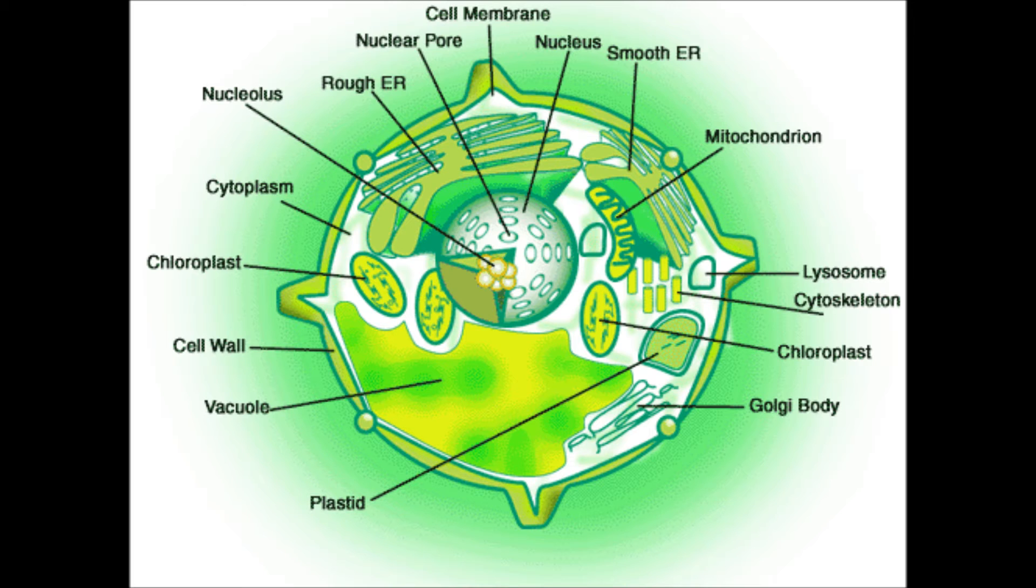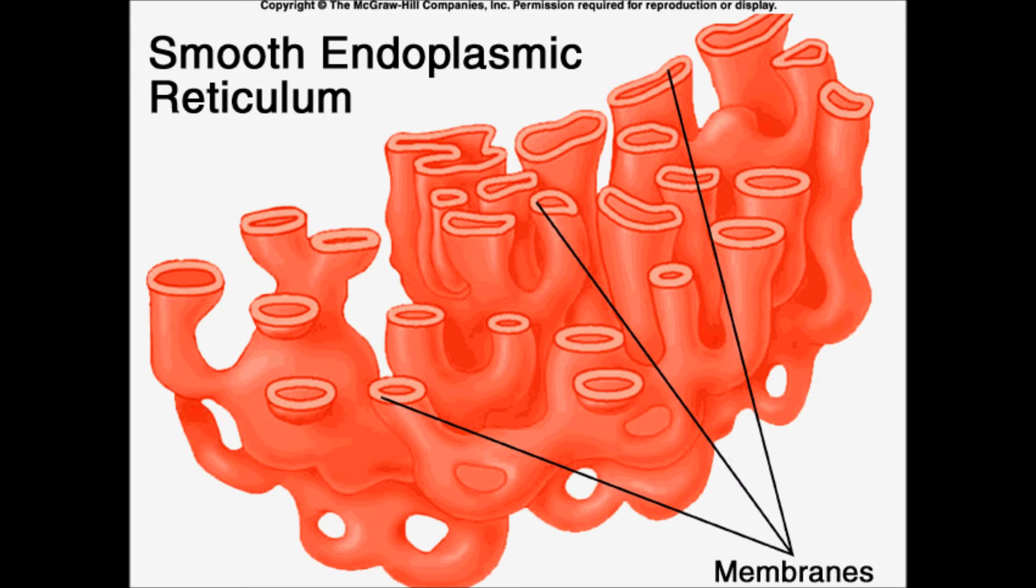Smooth endoplasmic reticulum has wavy membranes, and it looks like pipes. They create and store steroids, creating such a hype. Ions are stored, which the plant cell may need at another time. This organelle's key to survival, ignoring it would just be a crime.